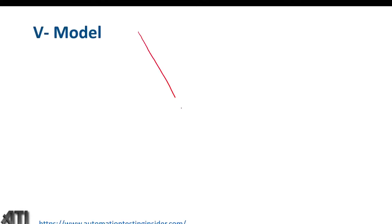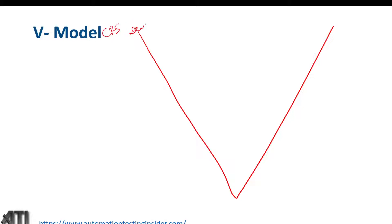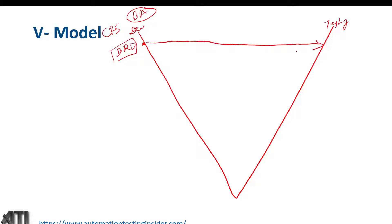Let me draw a V-shaped diagram. The first step is getting requirements from the customer in the form of a CRS — Customer Requirement Specification. With the help of a Business Analyst (BA), who works with the customer to gather requirements, the BA converts those requirements into a BRD — Business Requirement Document — which is given to both the development team and the testing team. The tester will go through the BRD and create an Acceptance Test Plan and Acceptance Test Cases.